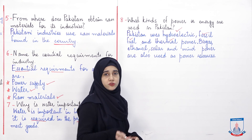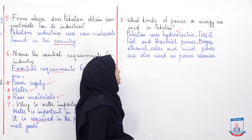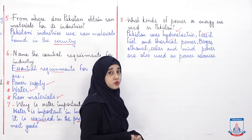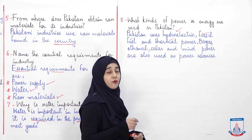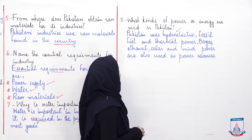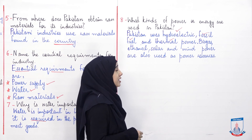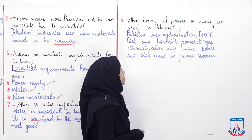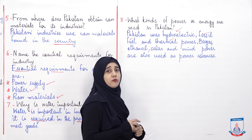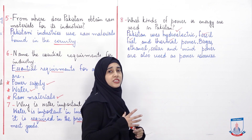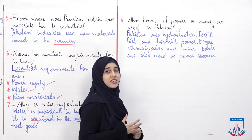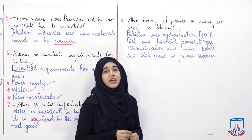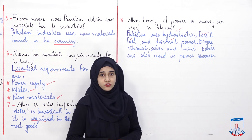But there are other forms of power as well which can be used in our country, such as biogas which can be obtained from burning cow dung, then ethanol, solar which is the energy that comes from the sun, and wind power which is the power that comes from the wind. These are all forms of power that are used in our country.